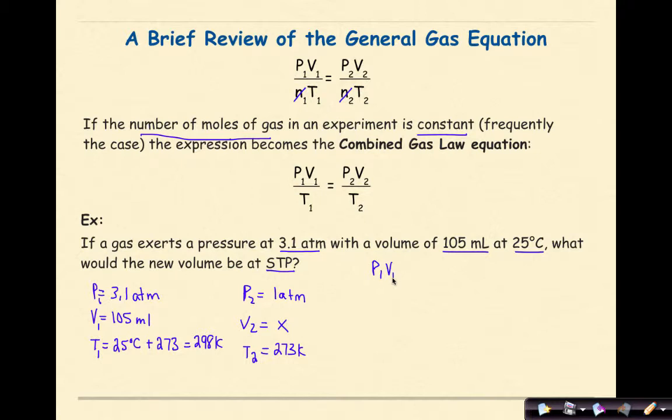So if I rewrite my formula, it's P1 V1 over T1 equals P2 V2 over T2. Now I'm going to take these variables and plug them into my equation. So I'm going to have 3.1 atmospheres, my volume is 105 milliliters, my temperature is going to be 298 K, and that is going to equal P2 which is going to be 1 atm, V2 which is what I am solving for, and then T2 which is temperature at STP, which is 273.